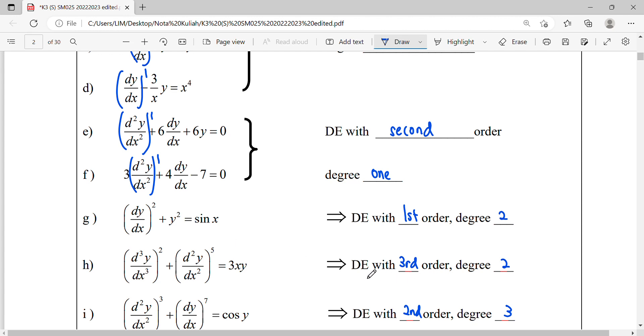So the last example here, second order, the degree here is power three. So we refer to the highest derivative, so this is your derivative referring to your order. Its power referring to its degree.